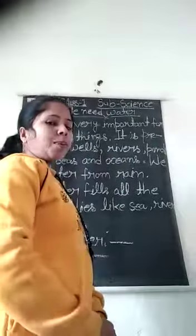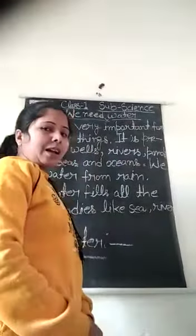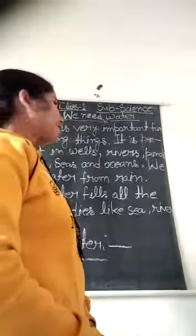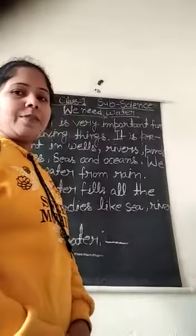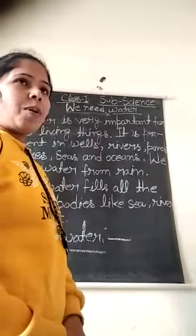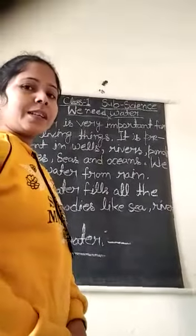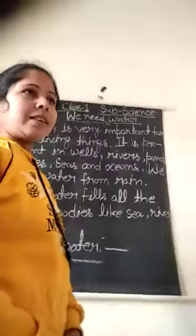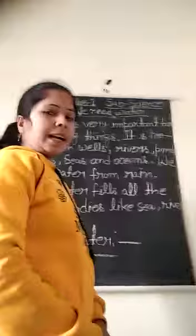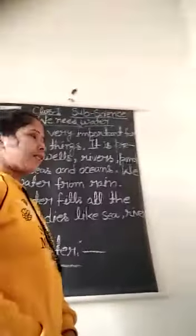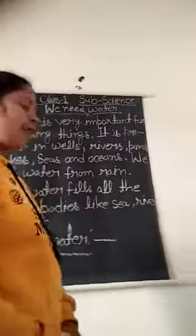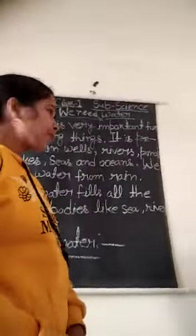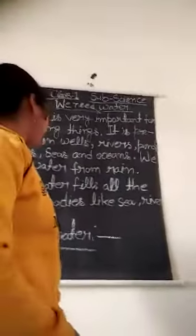Water is very important for all living things. It is present in waves, ponds, rivers, lakes, seas and oceans. We get water from rain.